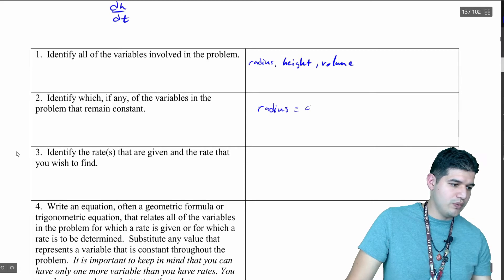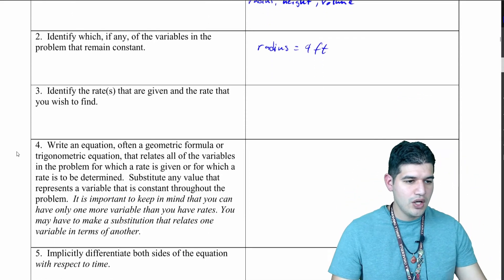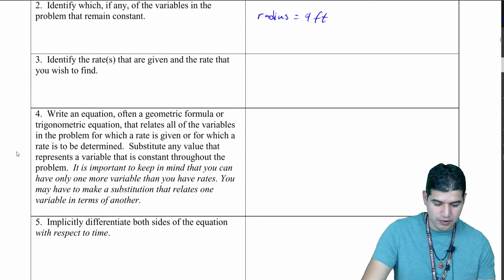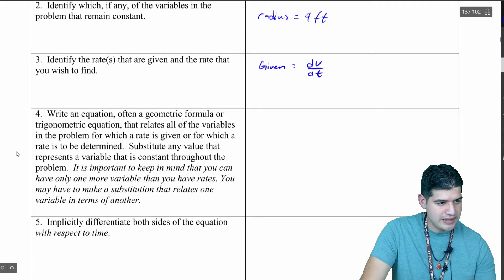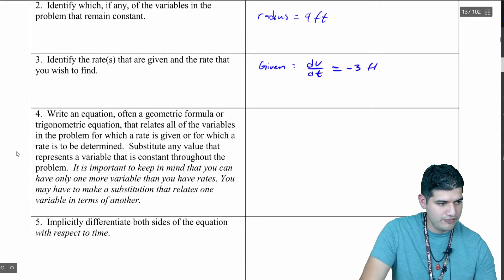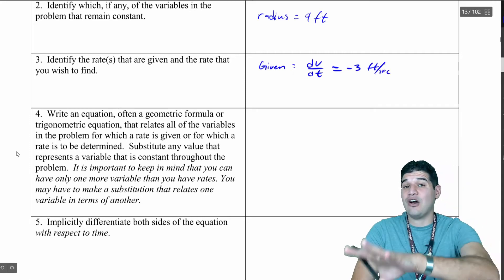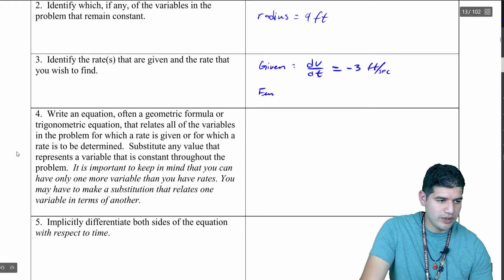What is given in our problem? We're given dV/dt, and that's going to be equal to negative three feet per second - negative because it's leaking out, it's becoming less.